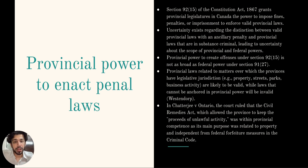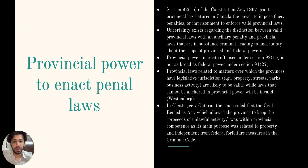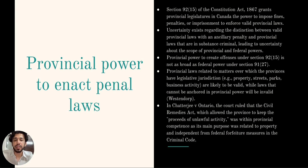Provincial laws pertaining to matters falling within provincial jurisdictions — such as property, streets, parks, and business activities — are generally considered valid. These laws are firmly anchored in the province's legislative authority and are more likely to withstand constitutional scrutiny. One of the challenges in this area of law is differentiating between valid provincial laws with ancillary penalties and laws that are essentially criminal in nature. This distinction gives rise to debates regarding the extent of provincial power under Section 92(15) and the federal power under Section 91(27).